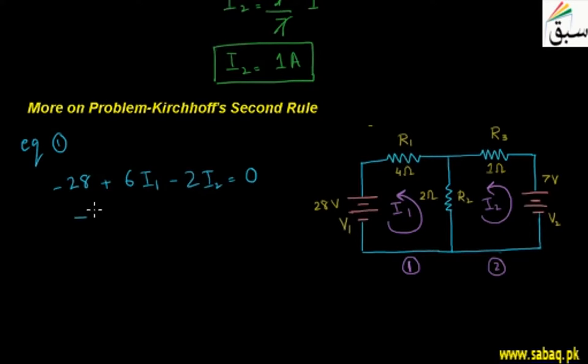So I have here, minus 28 plus 6I1 minus 2 into 1 equals to 0. So the value of I1 will come out from this. So here the value of I1 will be 28 plus 2.